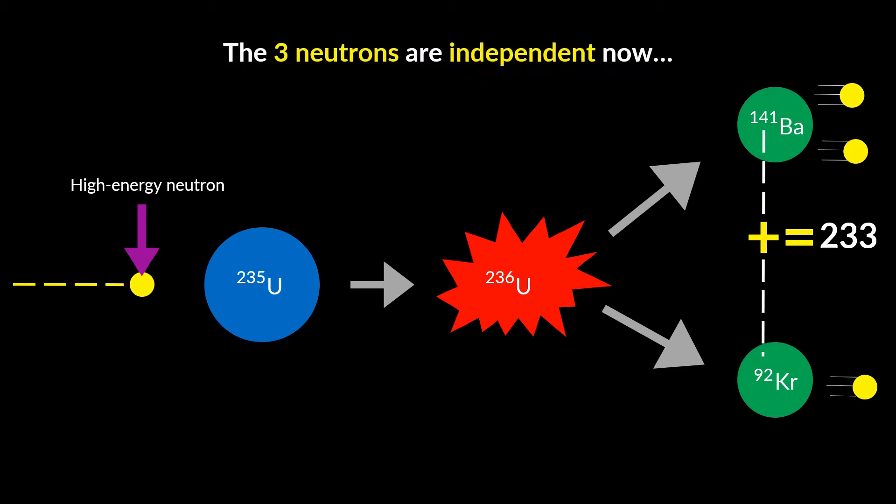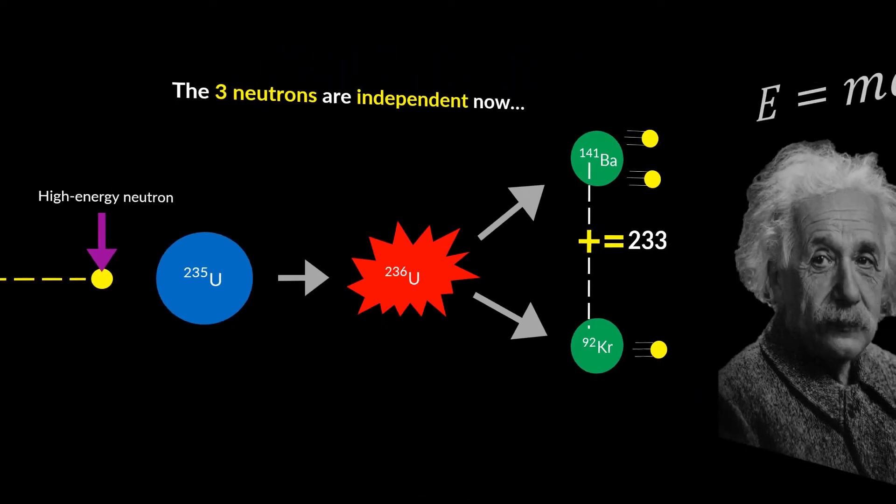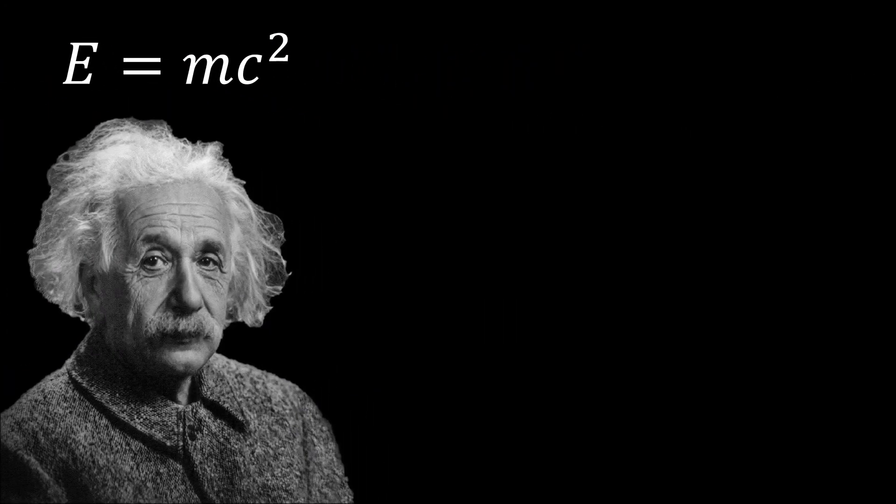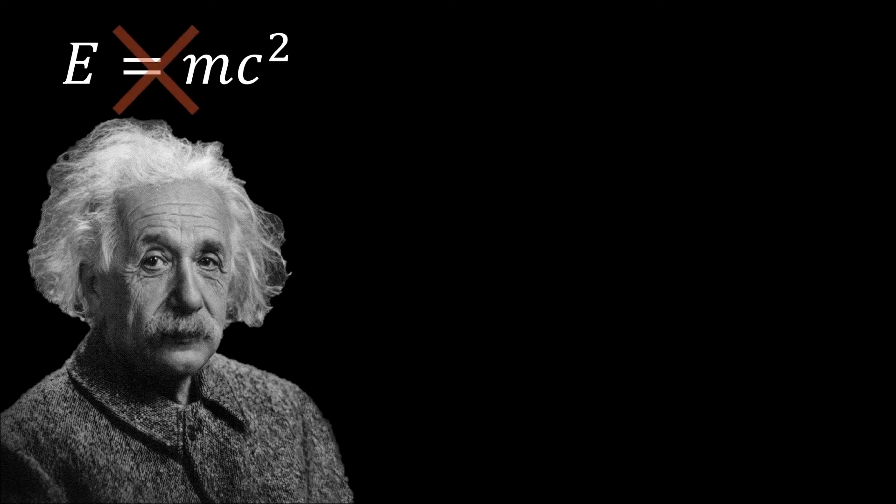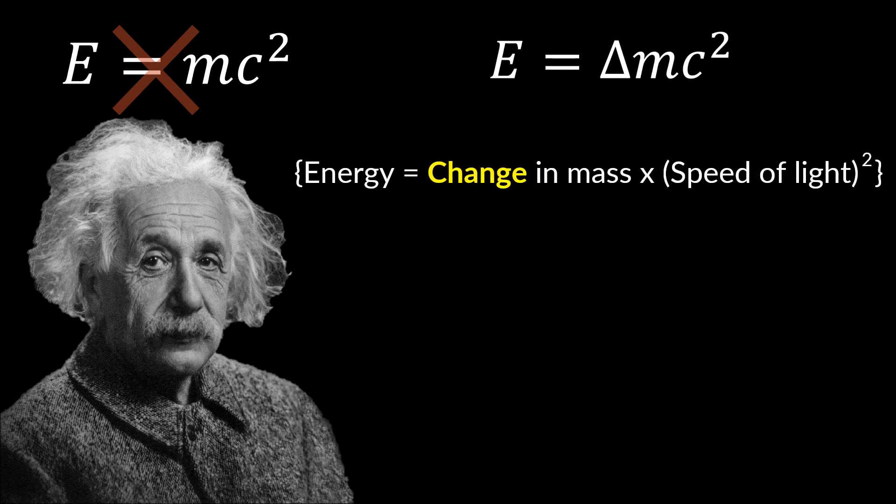As complicated as it is getting, I have to tell you how heat is produced here. So please bear with me. Einstein's famous equation pops in here. E equals MC squared. However, this equation is technically incomplete. The actual equation is this: Energy equals change in mass times speed of light squared. The key word here is change.